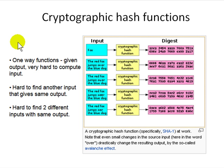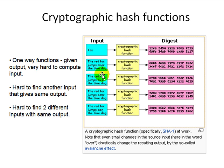It's hard to find two different strings which produce the same output. If you have the hash you can't reverse it, and given one string you cannot figure out another string that produces the same hash. For example, if you have a hash for 'please pay $100' and you want to change it to $1000, you won't be able to find another string with the same hash. So from the input you can go to output, but from the output you cannot go back to the input.